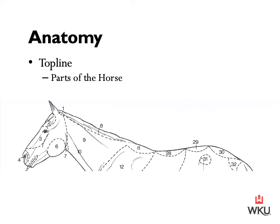Our horse's back line corresponds to numbers 8, 11, 28, 29, and 30. At number 8, we have our horse's crest. At number 11, we have the withers. At number 28, we have the back. At number 29, we have the loin. And at number 30, the croup. So it goes: crest, withers, back, loin, and croup.